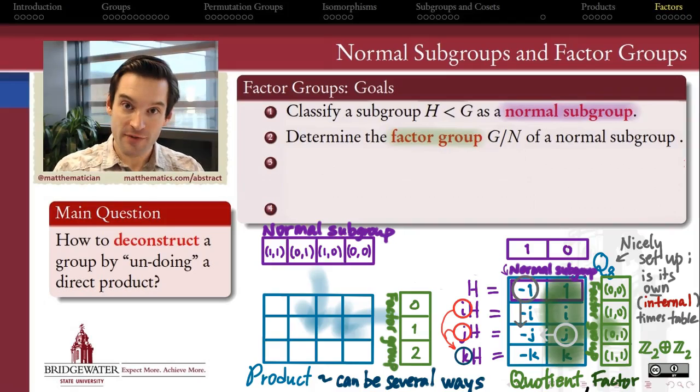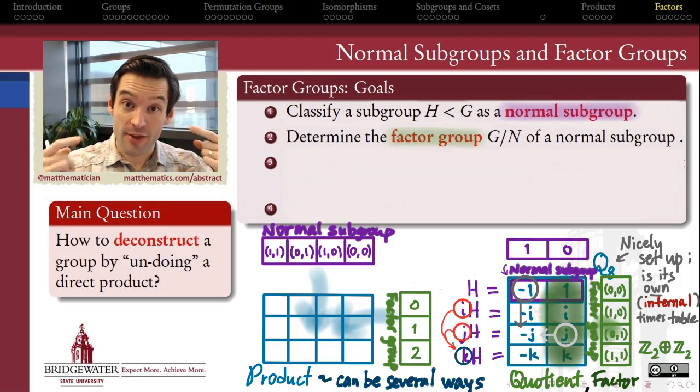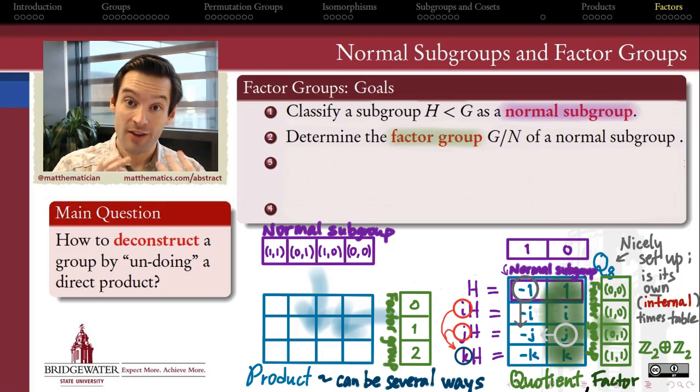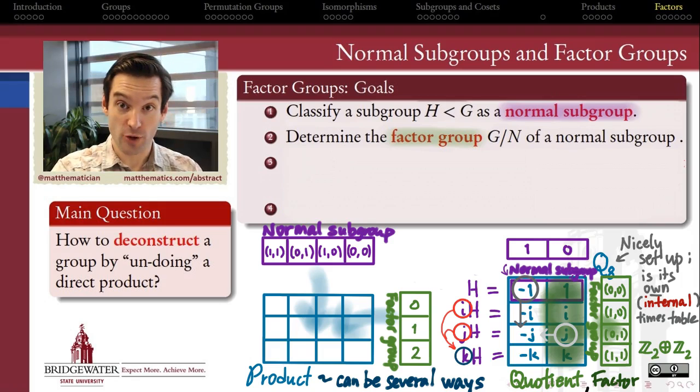Normal subgroups can serve as building blocks for larger groups precisely because their cosets themselves have the ability to be a group in and of their own right. In this video, we're going to turn our attention to that group, the group of cosets of a given normal subgroup, called the factor group associated with that normal subgroup.